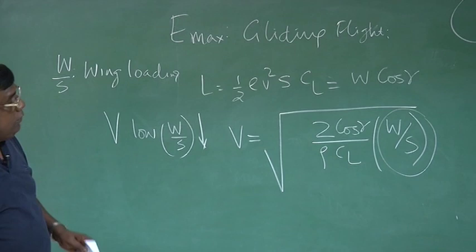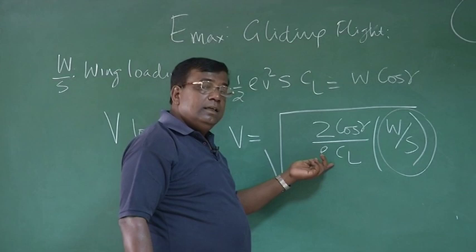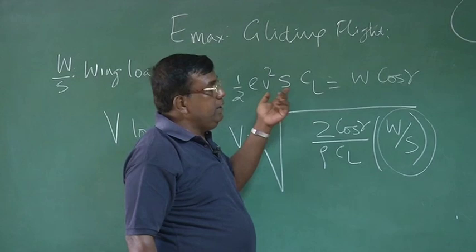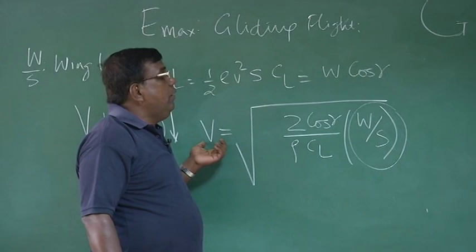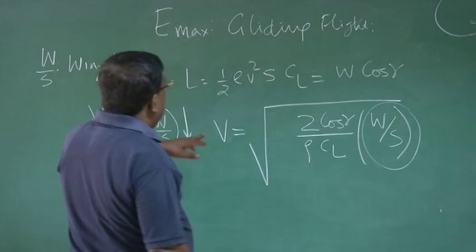W by S was what? Very important parameter, it is called wing loading. That is, if W by S is low, that means for a given weight, it has larger wing area. Larger wing area means it is very lift effective. So I could see that if I want this V to be low, then W by S should also be low. Also it tells me that as I go higher and higher, as I gain altitude, this V required to balance lift equal to weight, in the sense lift equal to W cos gamma, that also increases. That means, because rho goes on decreasing as I go higher and higher. So naturally, V also goes on increasing. So minimum velocity you get at sea level for a given CL and wing loading.